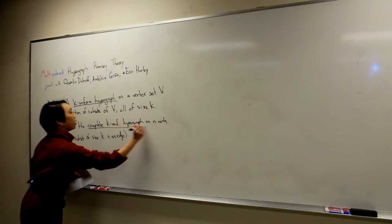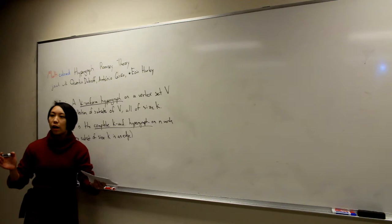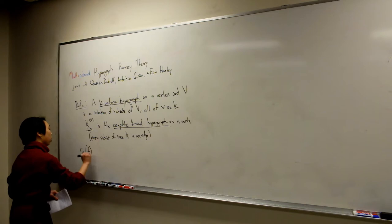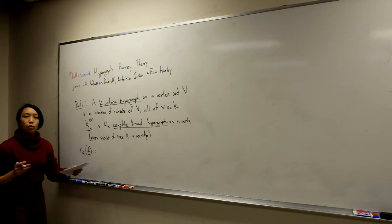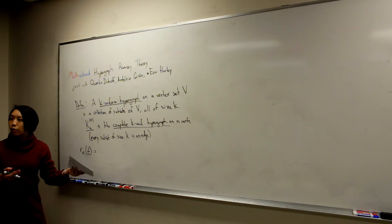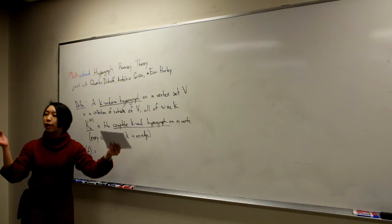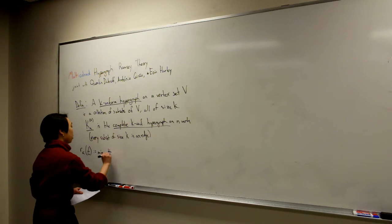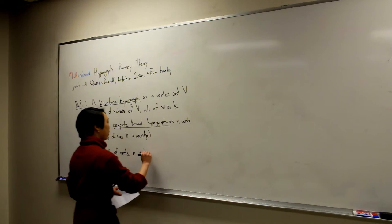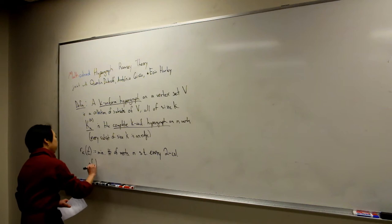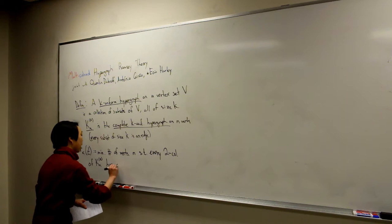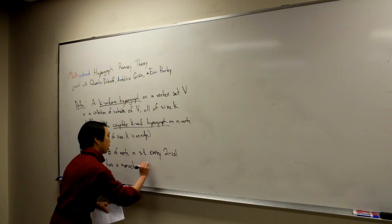Let's start with the classical version of hypergraph Ramsey numbers. I'll use the notation R_K(T), which is the minimum number of vertices such that any two-coloring of the complete K-uniform hypergraph must have a monochromatic clique of size T. It's the minimum N such that every two-coloring of the complete K-uniform hypergraph on N vertices has a monochromatic K_T inside.